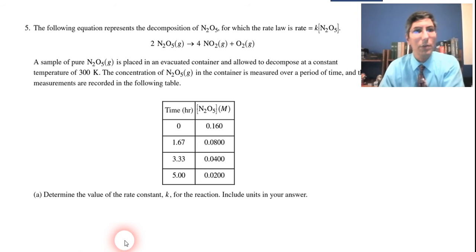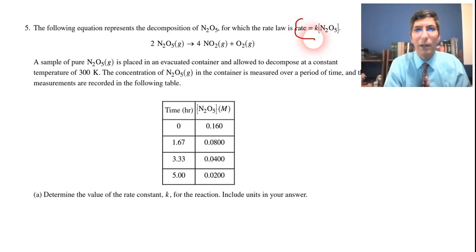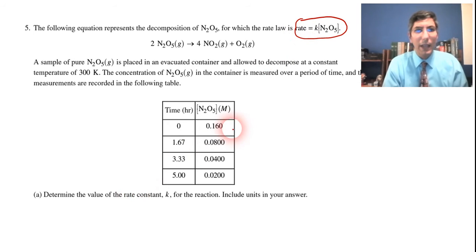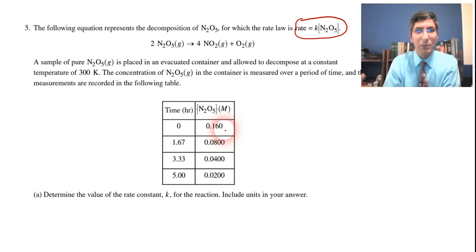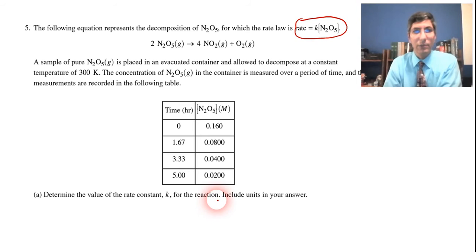We'll start with part A. Number five is basically a rate question. It comes right out and tells us what the balanced equation is, and it also comes right out and tells us what the rate law is, so that's kind of nice. Part A has a table of time in hours versus the concentration of dinitrogen pentoxide, and the concentration is going down at every certain interval of time. The question for part A says: calculate the rate constant for the reaction. Include units in your answer.